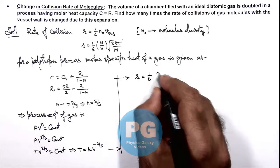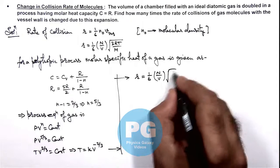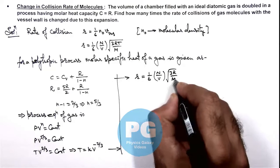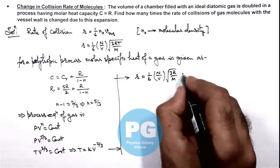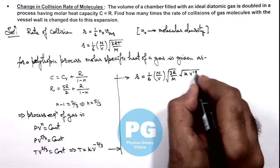n by v multiplied by, this is root of 3 r by m multiplied by root t. So this can be written as k times v to power minus 2 by 3.